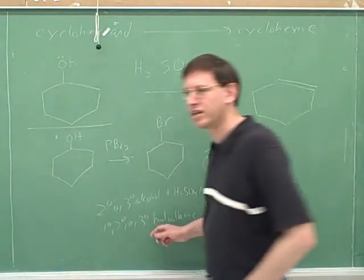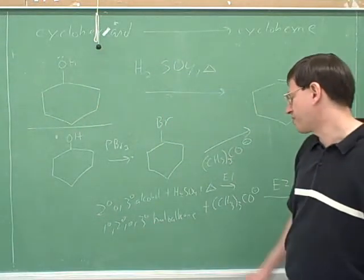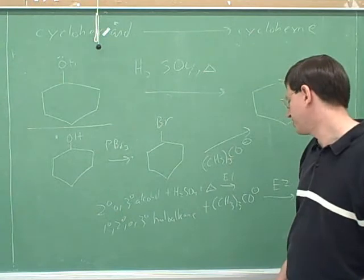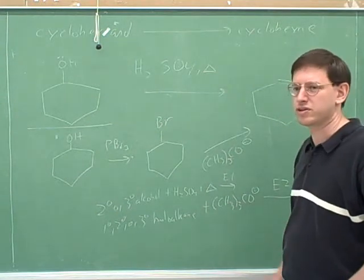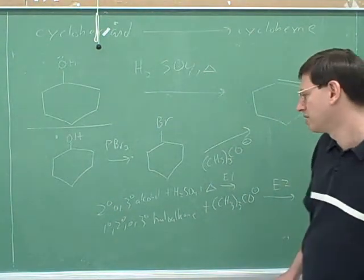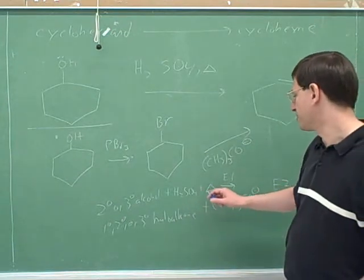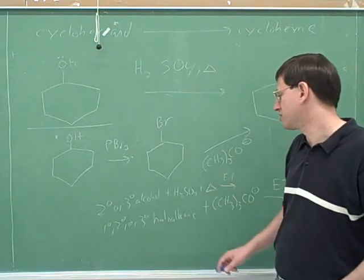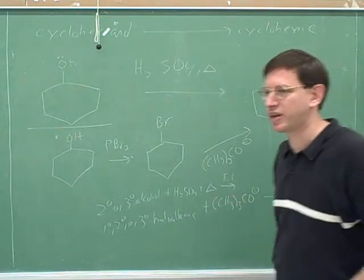Okay. You see what I wrote here? Yeah. If you start with a primary, secondary, or tertiary haloalkane, you can do an E2 with a strong bulky base. Okay. But H2SO4 plus heat only works on secondaries and tertiaries because you can't form a primary carbocation.